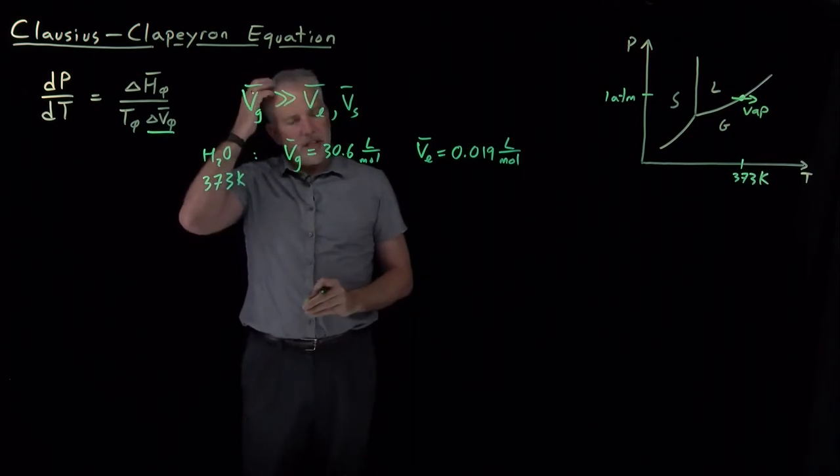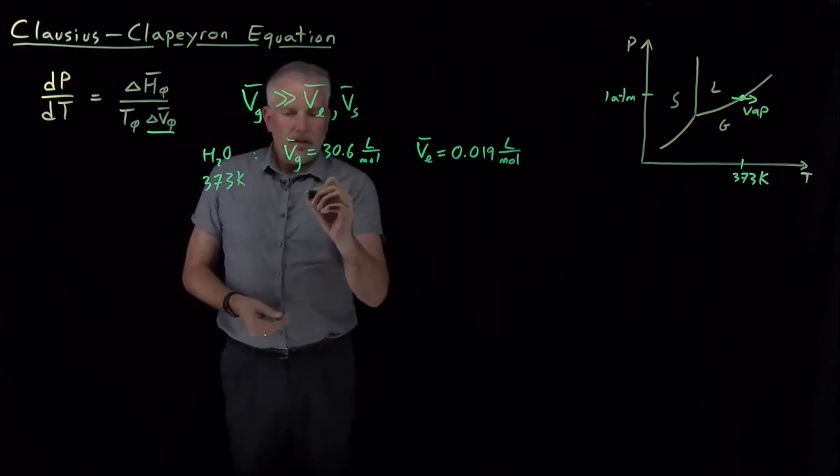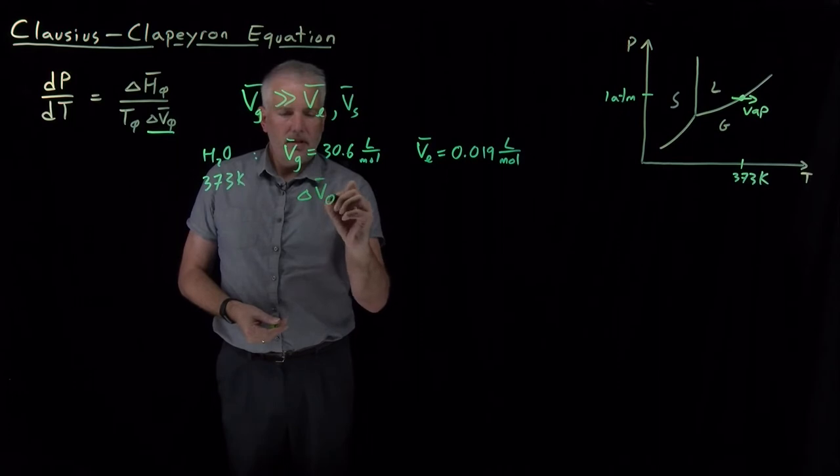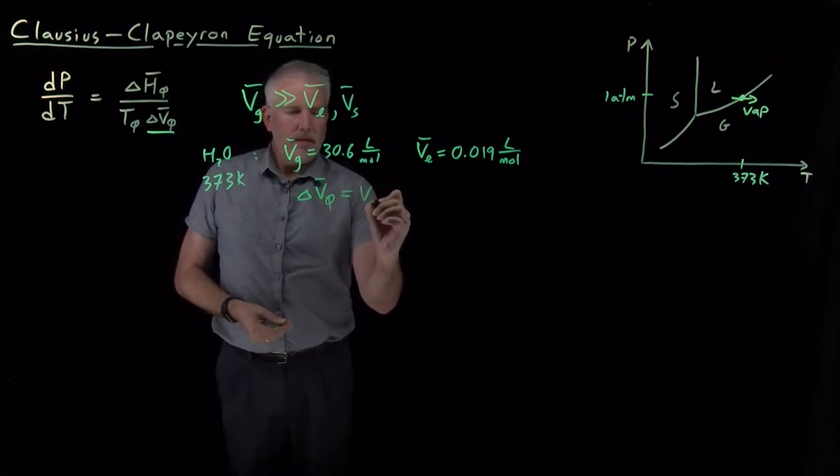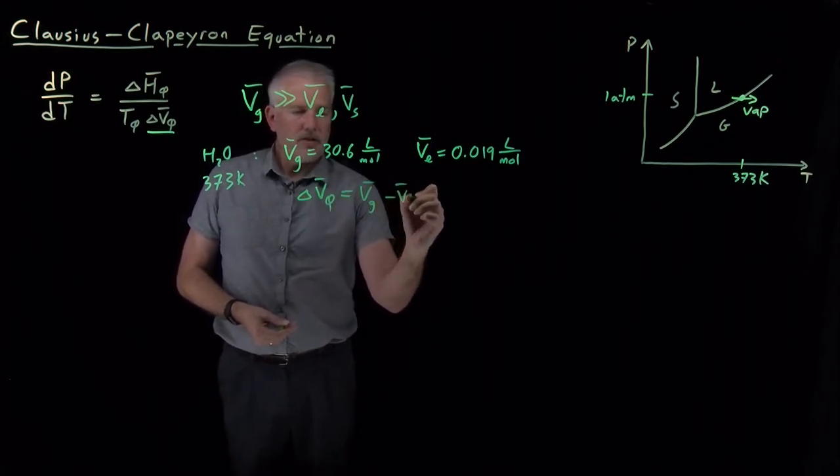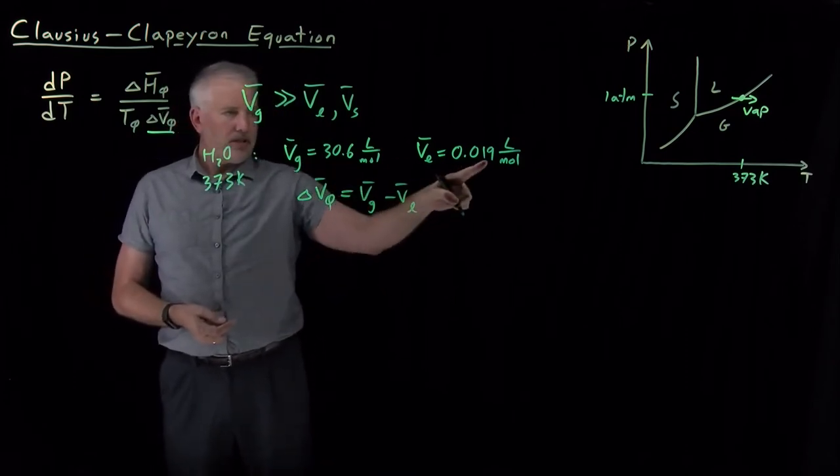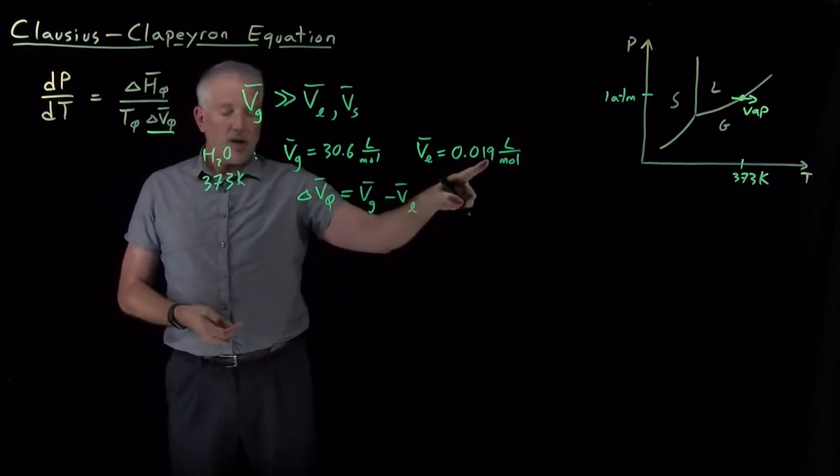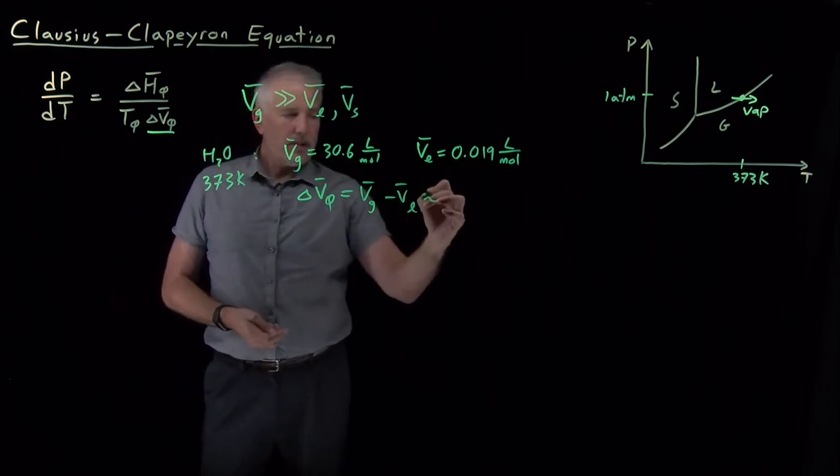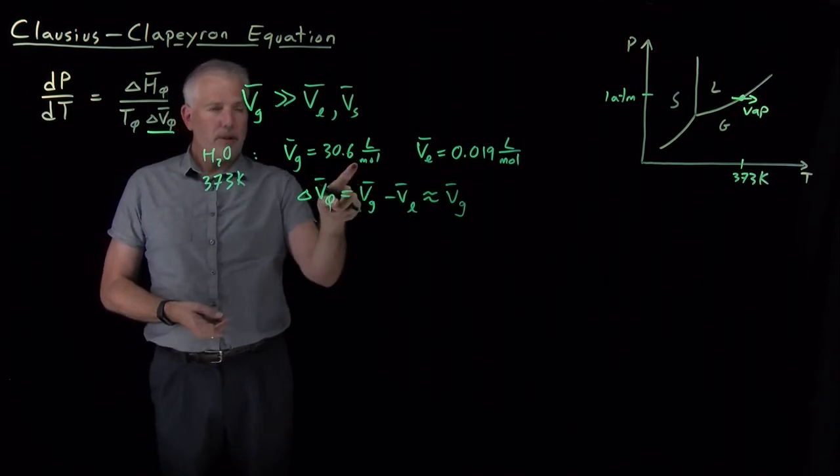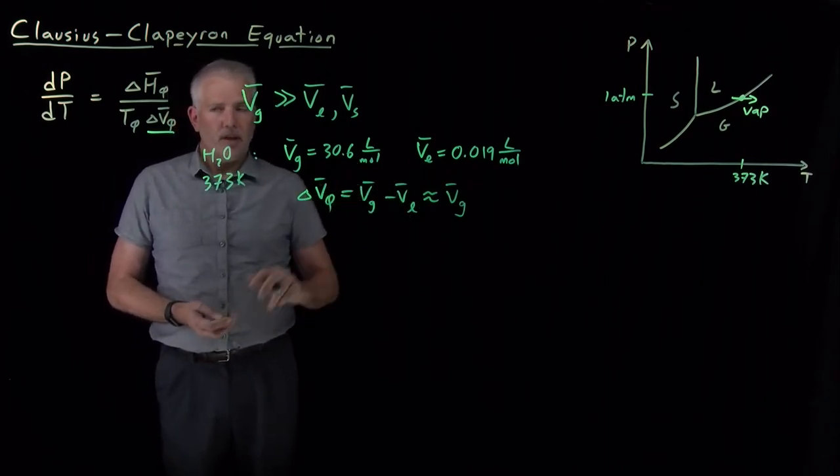For that phase change, the difference, so the final state gas minus the initial state of the liquid, volume of the gas minus volume of the liquid, 30.6 minus this number that's only out in the hundredths of a liter per mole, that's going to be about the same as the volume of the gas. Essentially, the volume of the liquid is negligible compared to the volume of the gas.